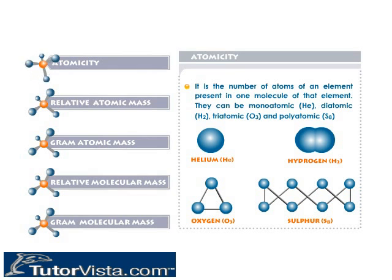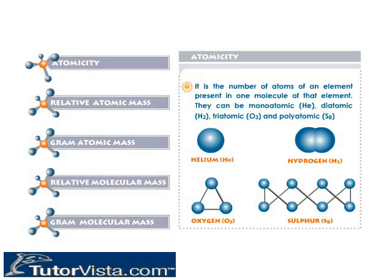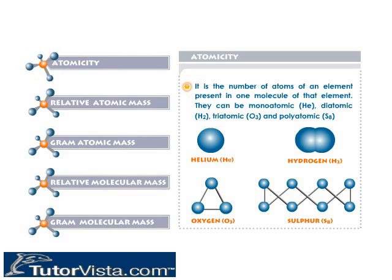Atomicity is the number of atoms of an element present in one molecule of that element. They can be monoatomic (e.g., Helium), diatomic (e.g., H₂ — Hydrogen), triatomic (e.g., Ozone O₃), and polyatomic (e.g., S₈).